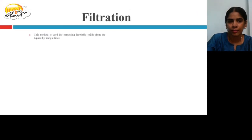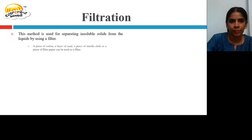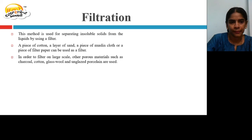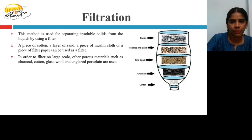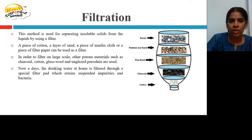Filtration is used for separating insoluble solids from liquids using a filter. A piece of cotton, a layer of sand, a piece of muslin cloth, or a piece of filter paper can be used as a filter. For large-scale filtration, porous materials such as charcoal, cotton, and unglazed porcelain are used. Nowadays, drinking water at home is filtered through a special filter pad which retains suspended impurities and bacteria.